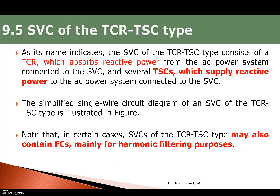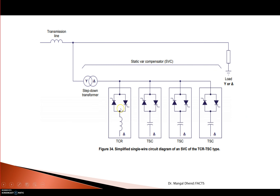In an SVC of the TCR-TSC type, when TCR is functioning it absorbs reactive power, and when TSC is in major functioning it supplies reactive power. The total power of the SVC will be whatever is generated by TCR minus TSC, because TCR absorbs power (positive) and TSC supplies power (negative). So total power QT equals QL minus QC. In the simplest wiring diagram one branch is shown, but it does not mean only one is used.